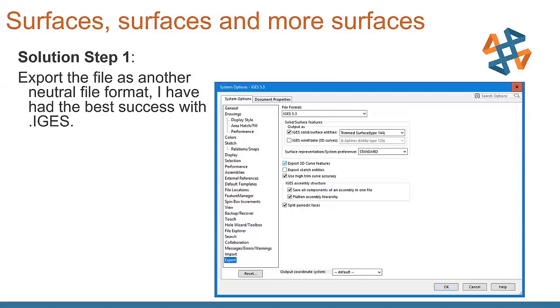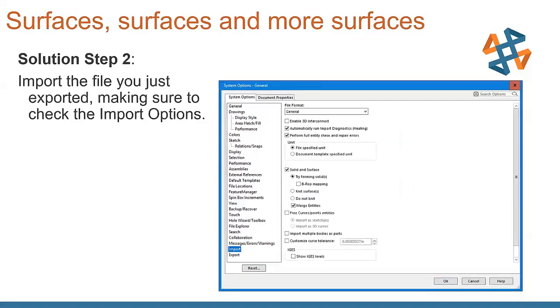What we do, we export that file as another neutral file format. I personally, I've had best success using IGIS file formats. You may want to try two or three of these just to see which one works out best for you. PARASOLID, STEP, all those are great options to use.